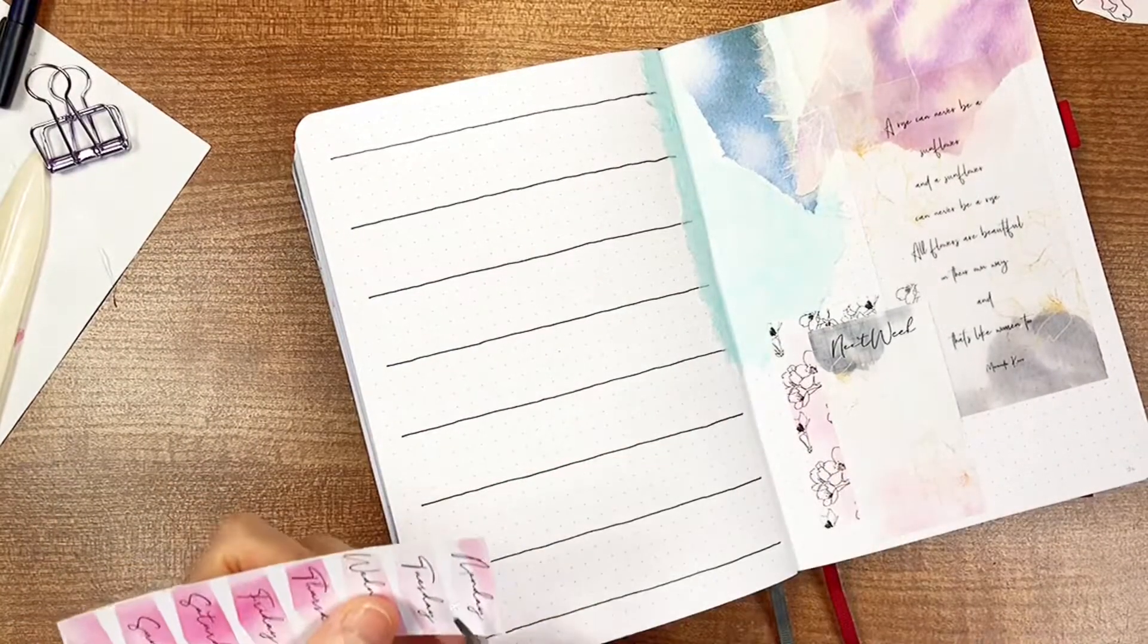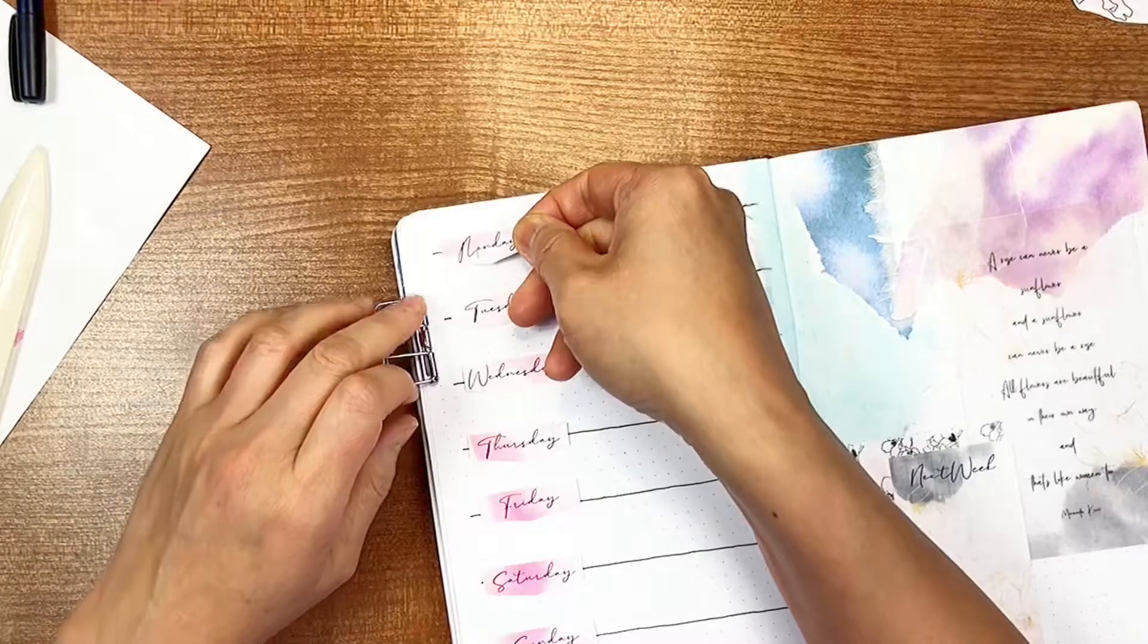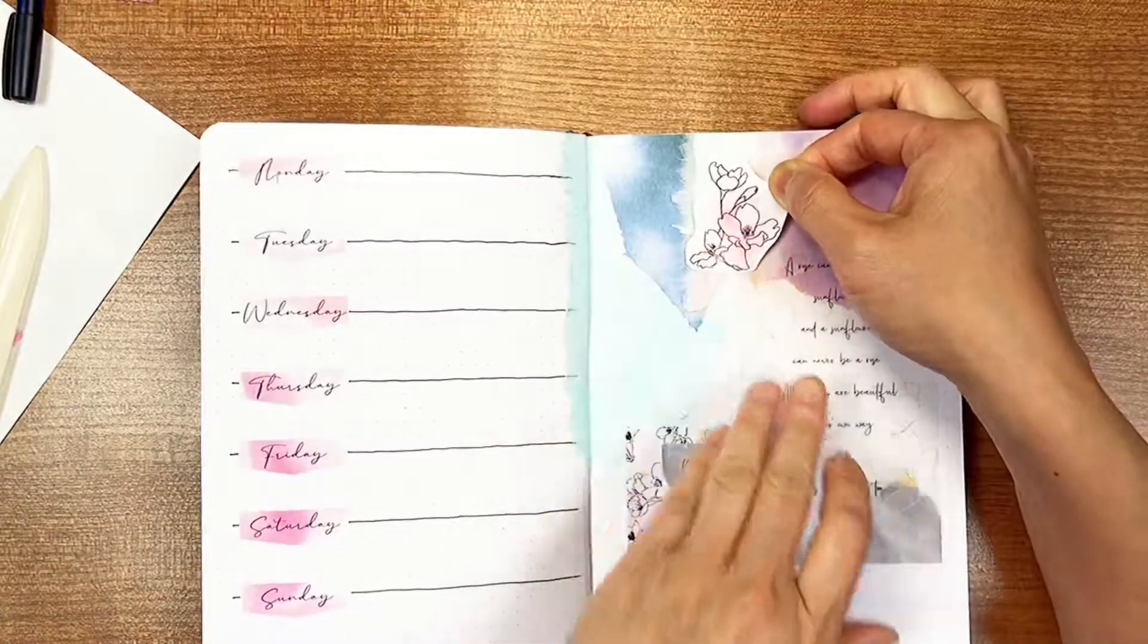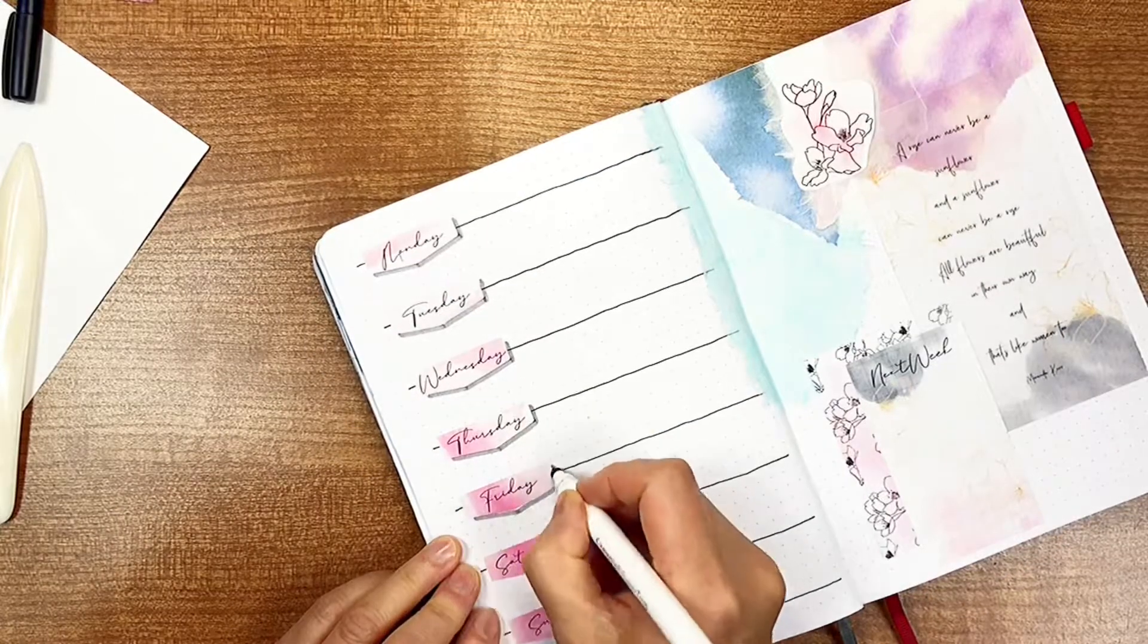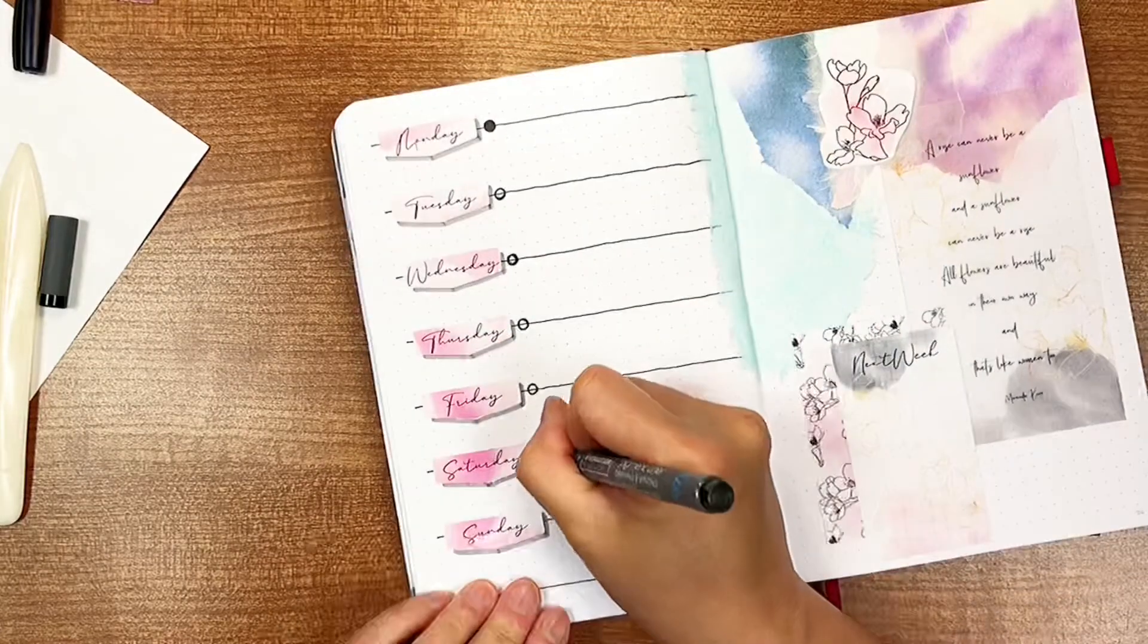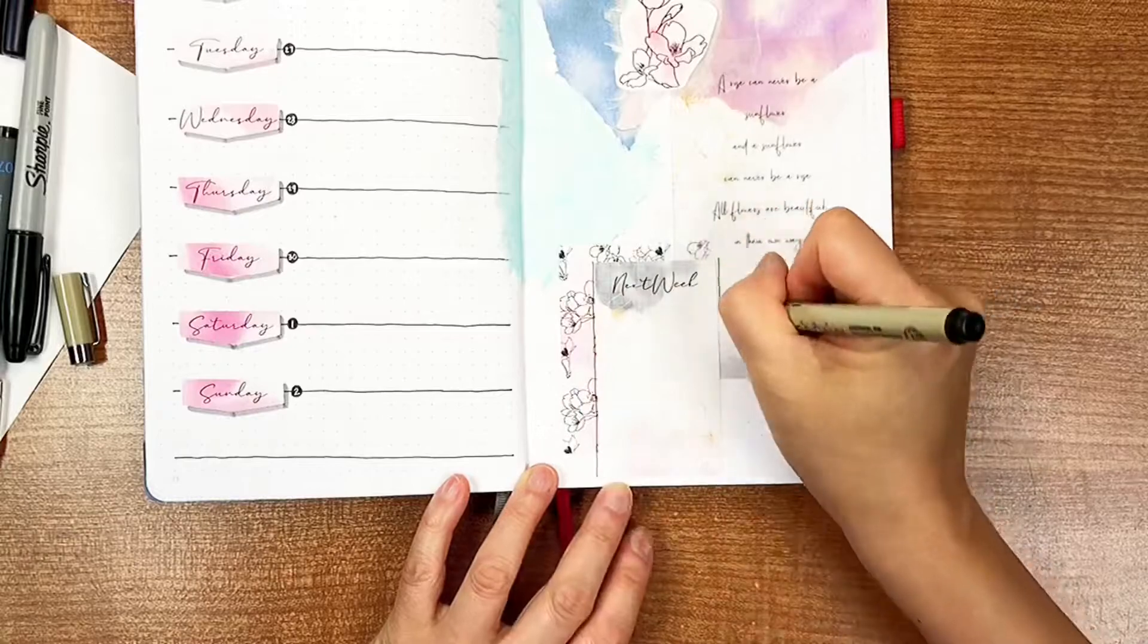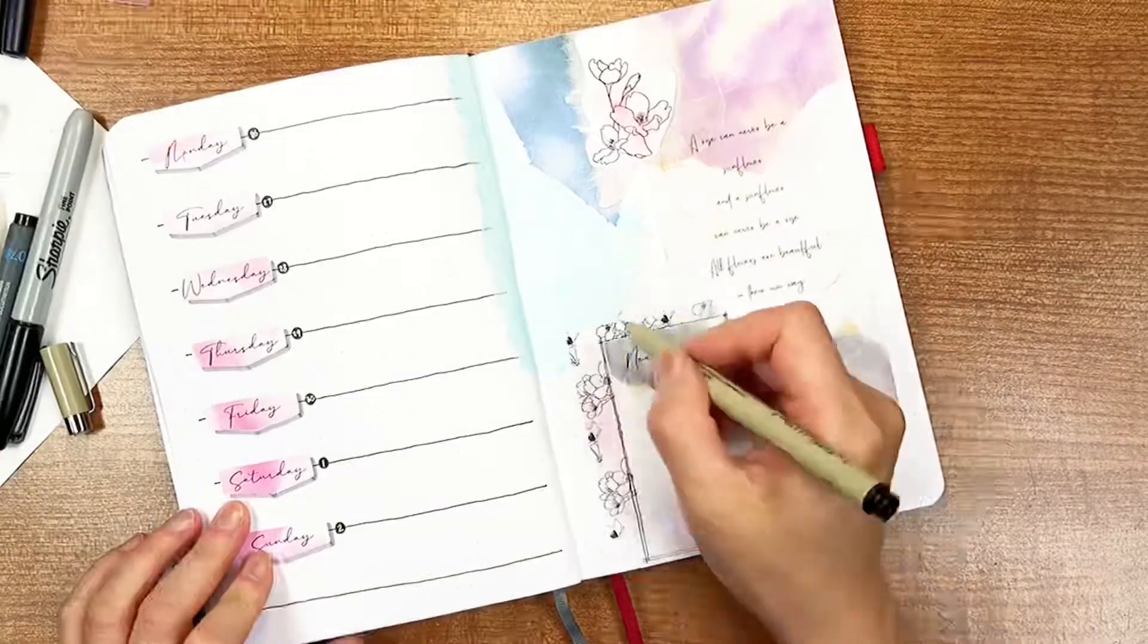Then, cutting the weekday stickers out and sticking them onto the page. And finally, drawing a black circle for the days and writing the numbers on top with a white gel pen. This is a simple but elegant page. What do you think?